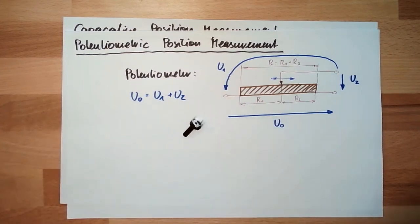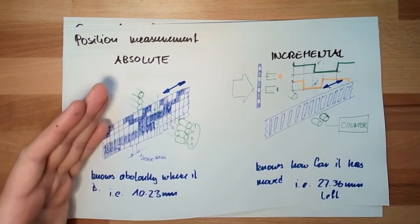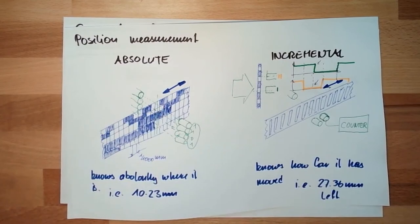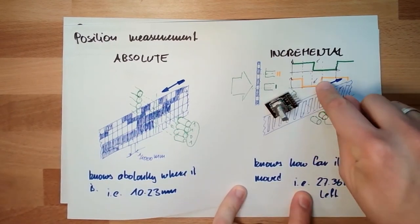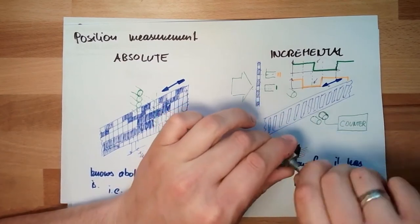Then we talked about these optical things, we talked about these incremental absolute things, and of course we had also in our Arduino, we had our rotary encoder, this thing. This is exactly the same principle like this, but turning.